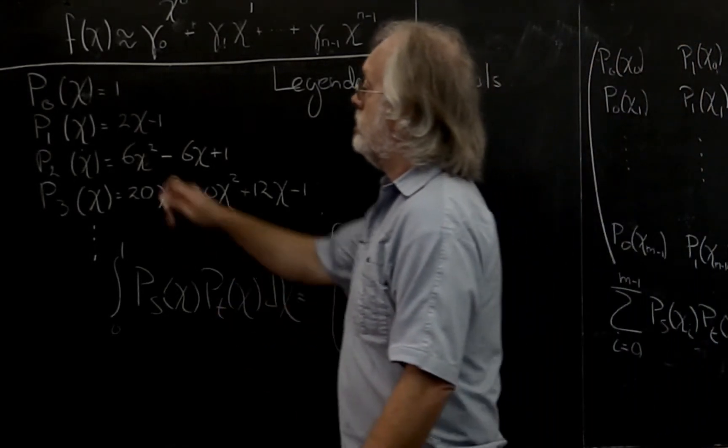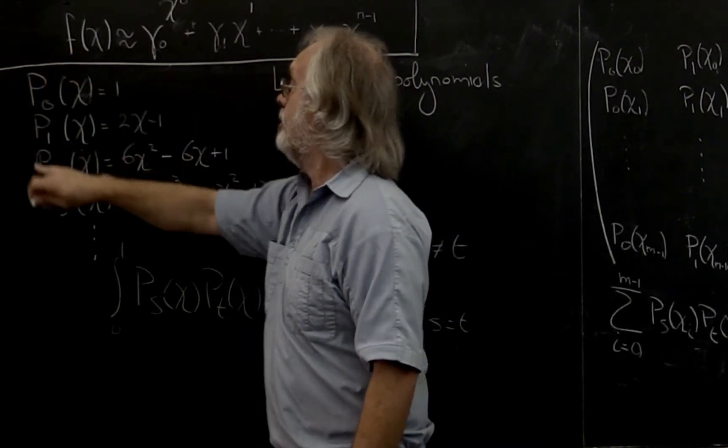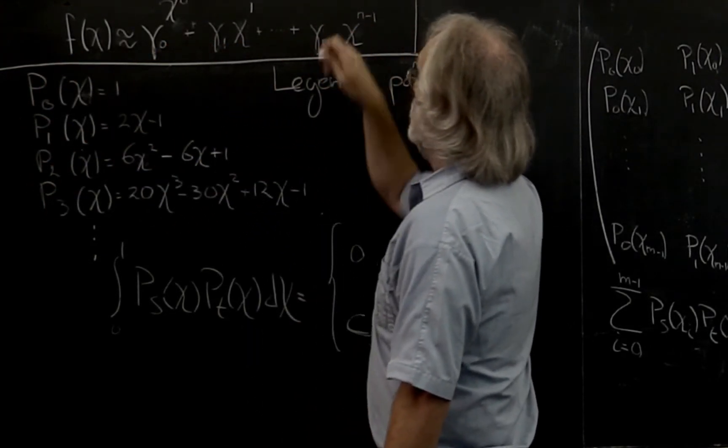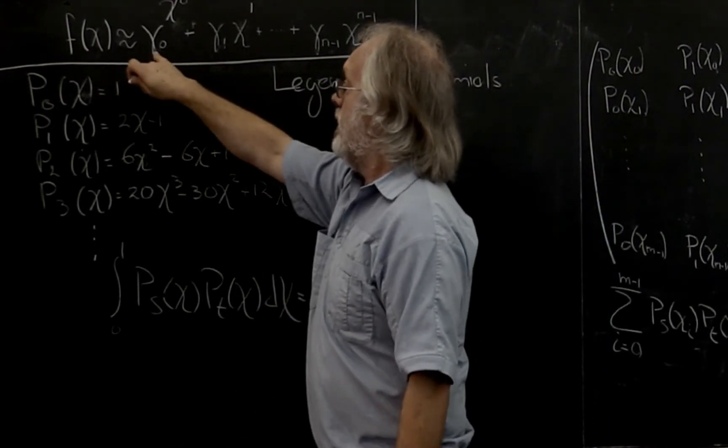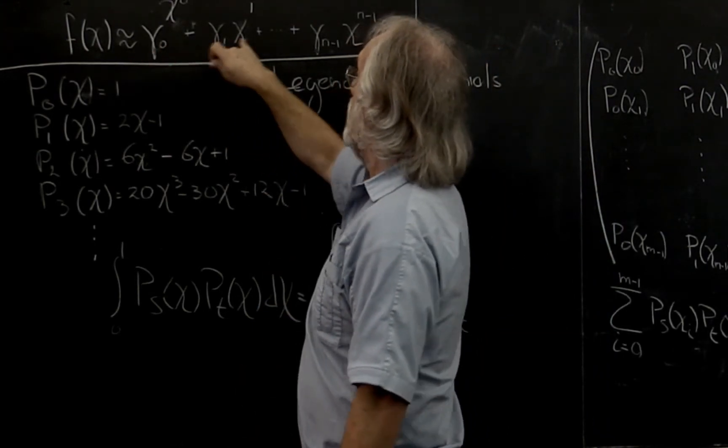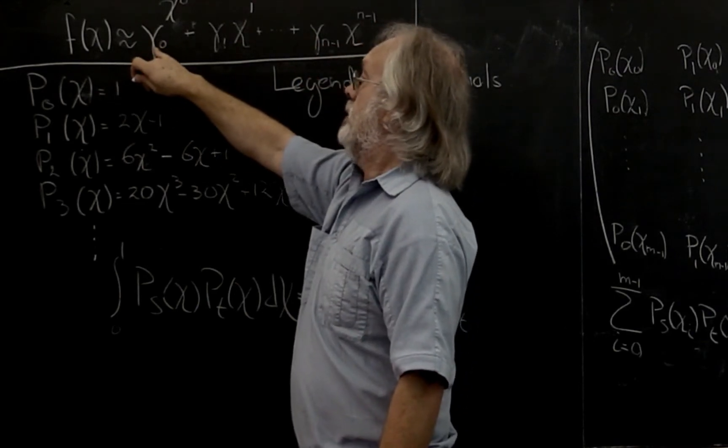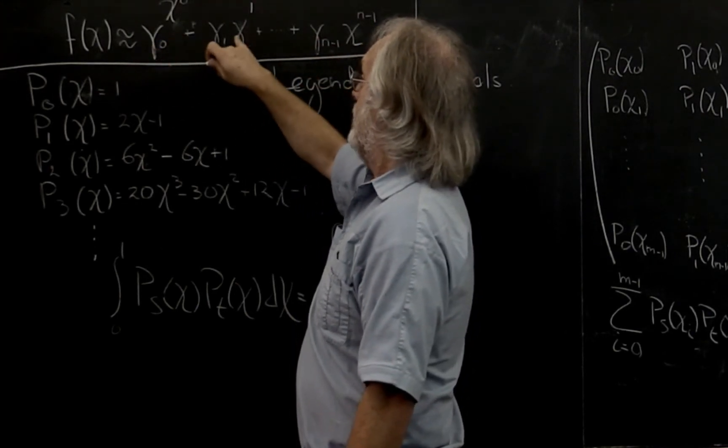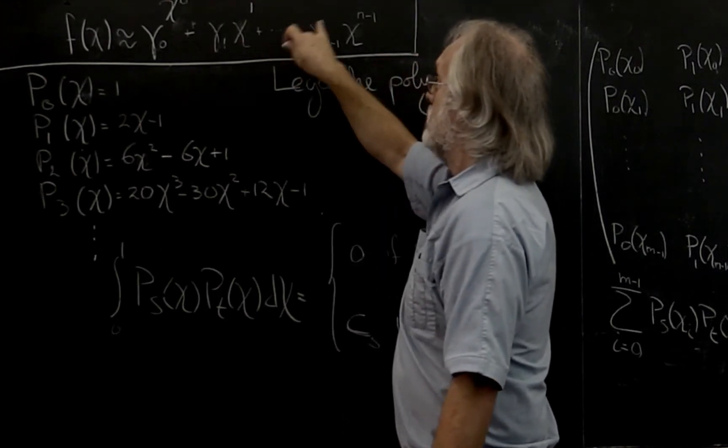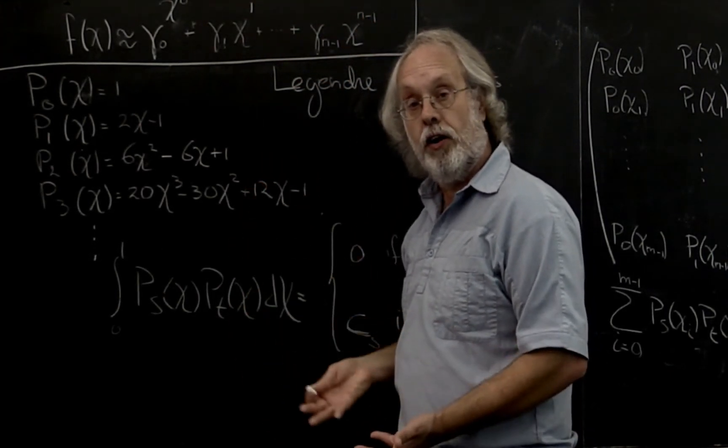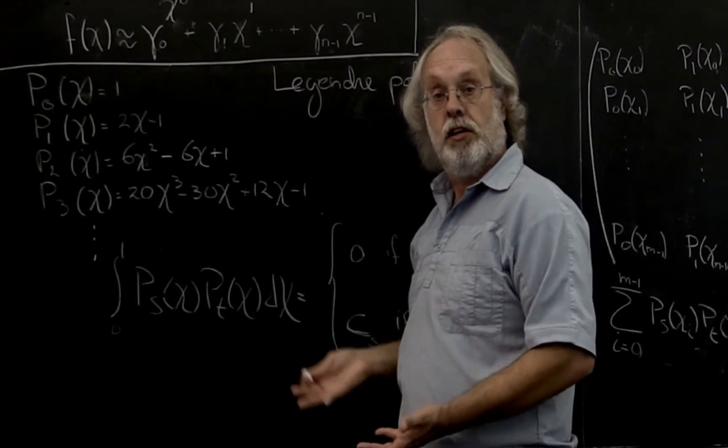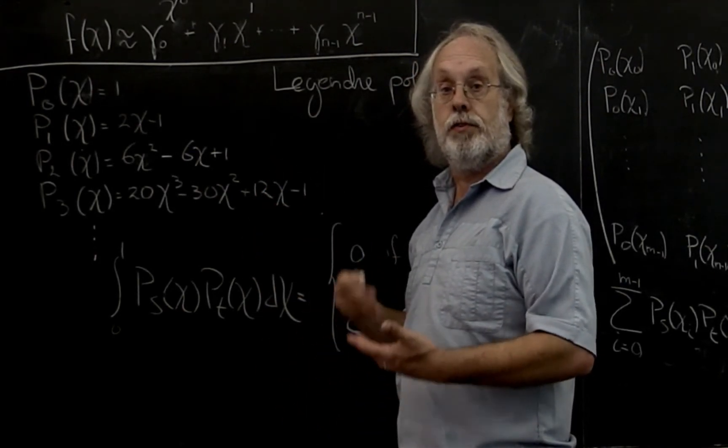Now we set out to approximate our function f with a polynomial of degree n minus 1. And at the moment what we're saying is that we want to take a linear combination of the function 1 and then chi and then chi squared and so forth. And the problem is that those parent functions start looking very much the same on the interval 0 to 1.